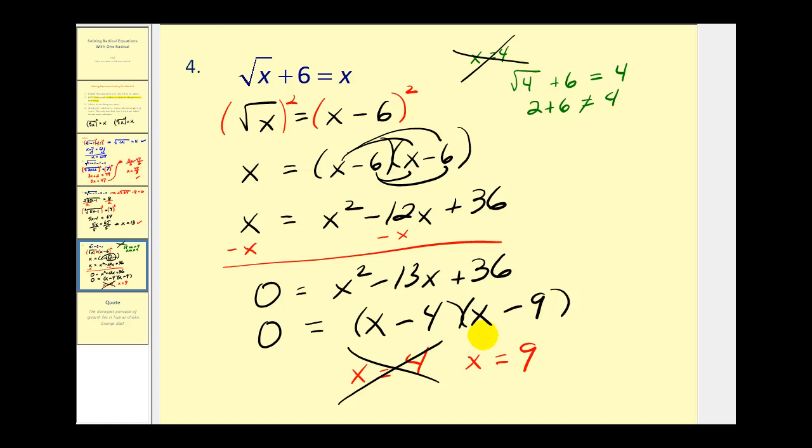Let's go ahead and check x equals nine. So we have the square root of nine plus six equals nine. And this looks pretty good. This would be three plus six equals nine. And that checks. So we do have one solution. But this is a prime example of why it's so important that we do check our answers.